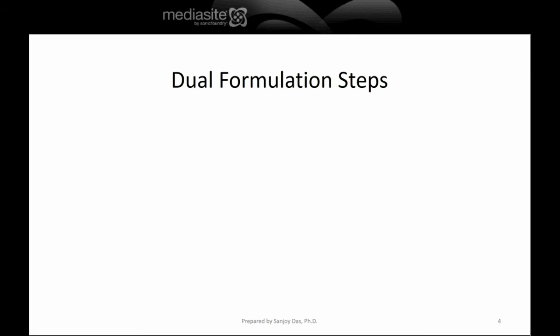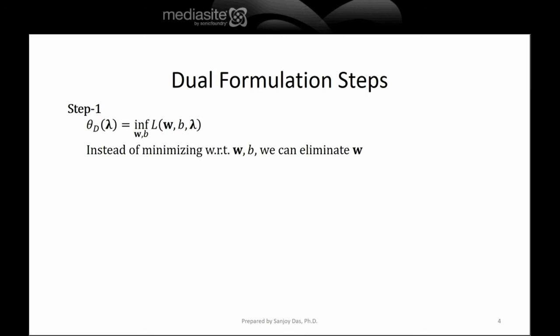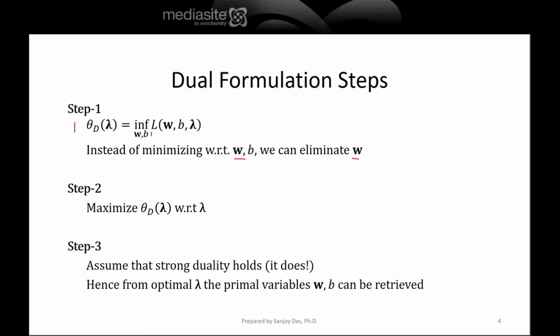Now let's look at how to do the derivation. We take the Lagrangian and compute the infimum with respect to W and B — that gives the dual. Instead of explicitly minimizing with respect to W and B, we simply eliminate W and B. The next step is to maximize theta_D with respect to the dual variable Lambda. Assuming strong duality holds, this dual formulation will allow us to retrieve the primal variables W and B directly.